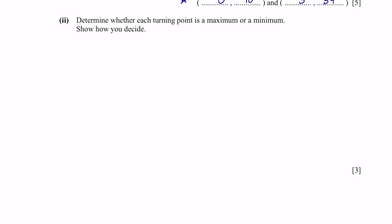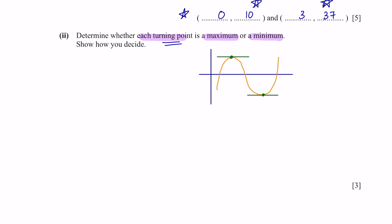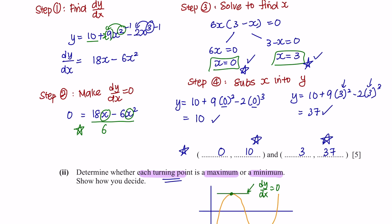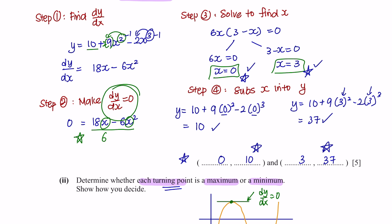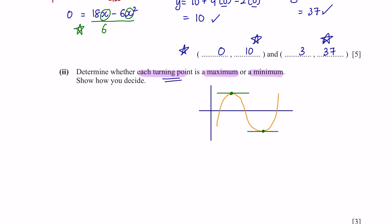Next, part 2, determine whether each turning point is a maximum or a minimum. So previously, we have found 2 turning points. At a turning point, the gradient of the curve will be 0. That's why previously we solved dy/dx equals 0. Now that we have found 2 turning points, we are looking to find the maximum point where the graph reaches its peak and the minimum point where the graph reaches the bottom.